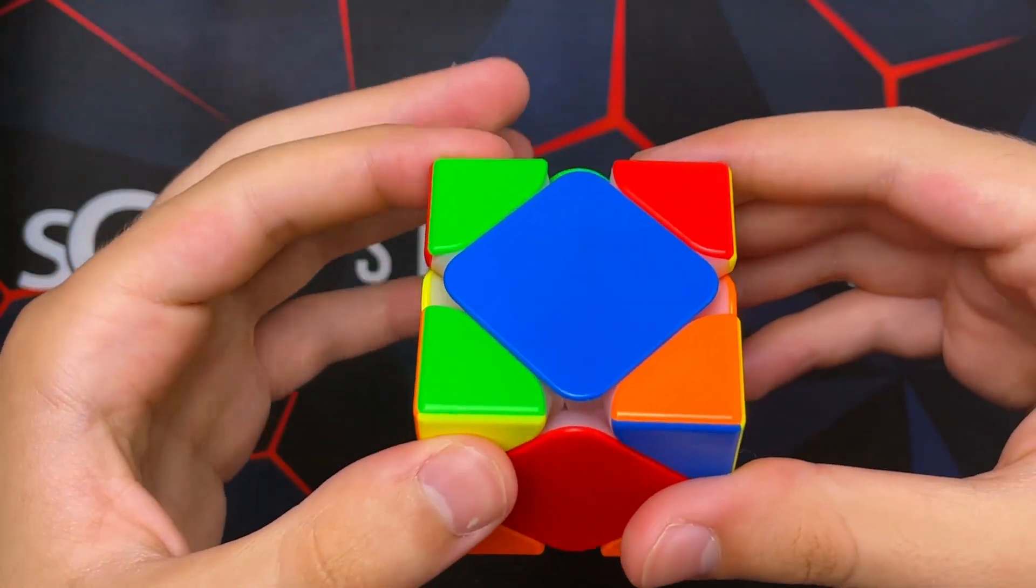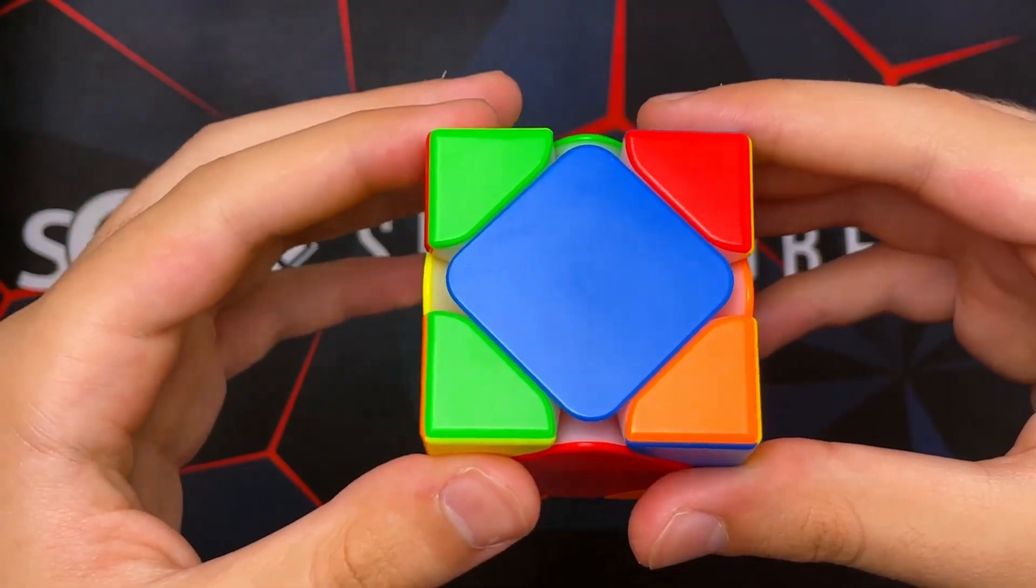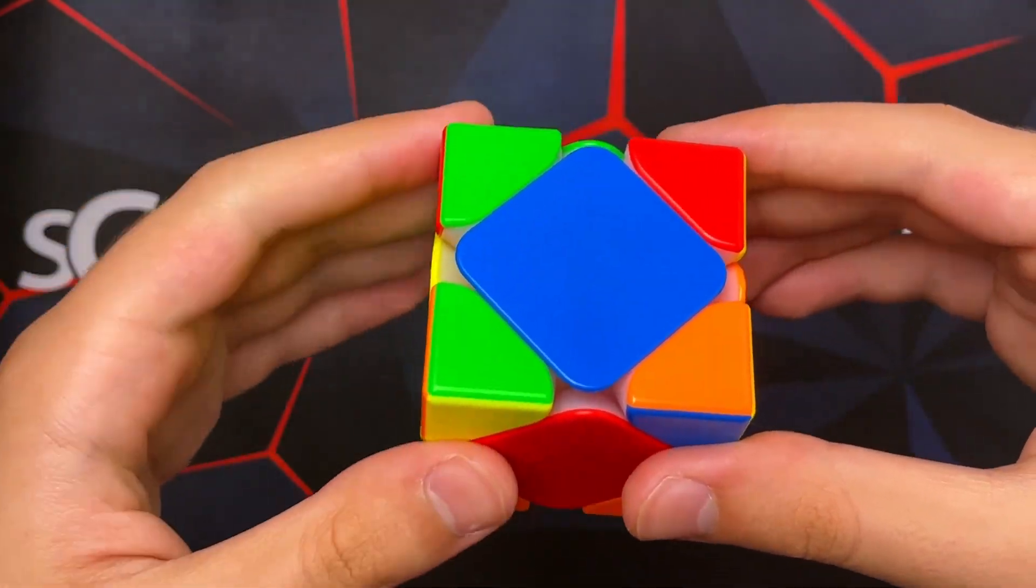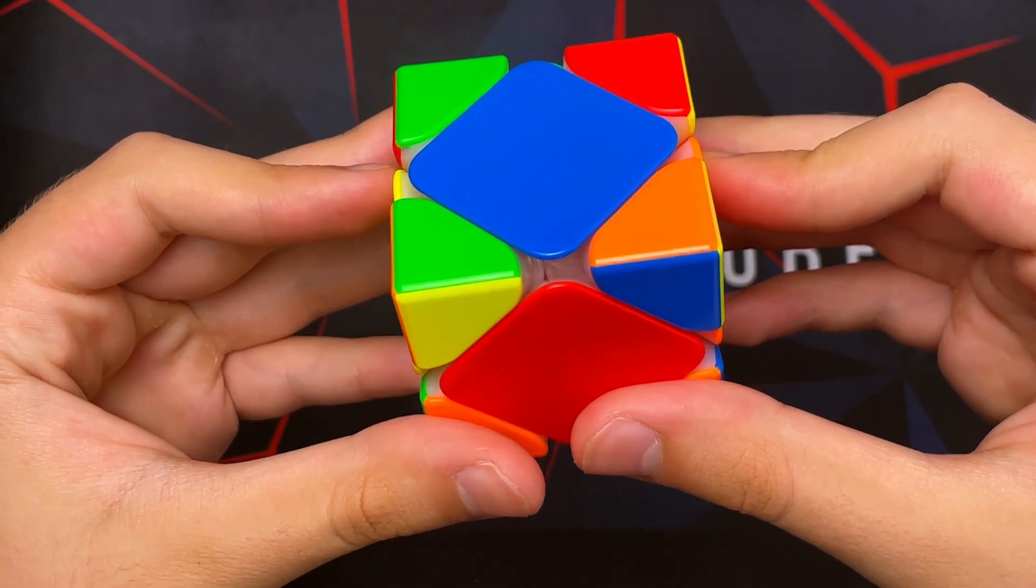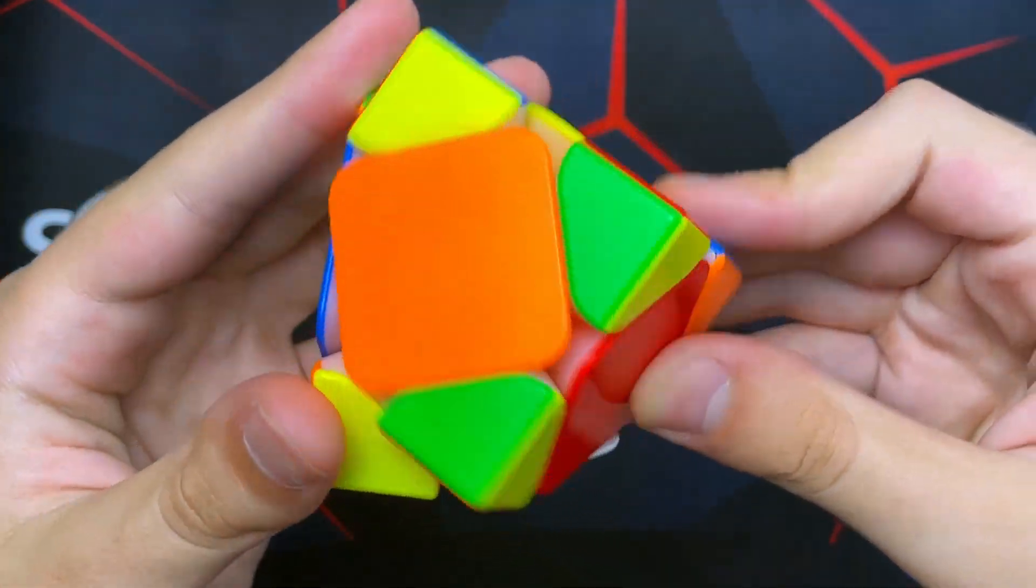The way that you solve this case is you hold these two headlights, or I don't even know what you call these, facing you on the left and then these facing that way. Then you just do the algorithm again and then the corners are solved.